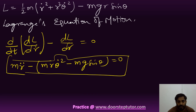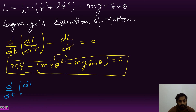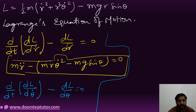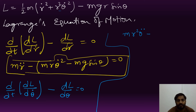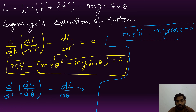For the second generalized coordinate θ: d/dt(∂L/∂θ̇) − ∂L/∂θ = 0. Differentiating with respect to θ̇ gives mr²θ̇, and differentiating again with t gives mr²θ̈. Then ∂L/∂θ gives mgr cosθ. So the second equation of motion is: mr²θ̈ − mgr cosθ = 0. We now have these two equations of motion derived using the Lagrangian approach. This is the final answer.